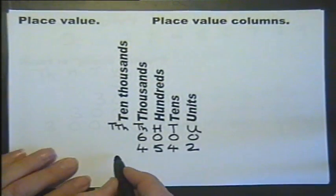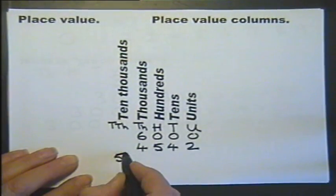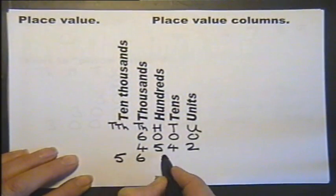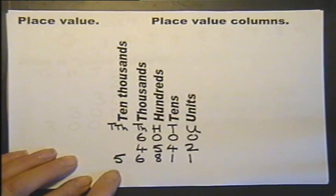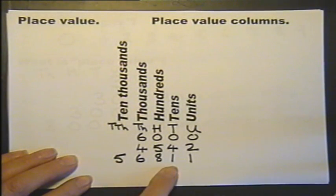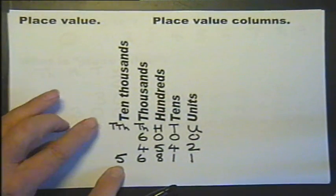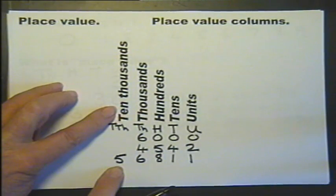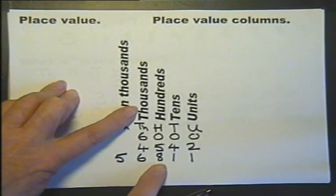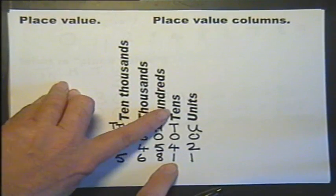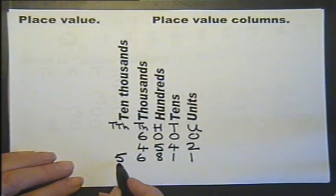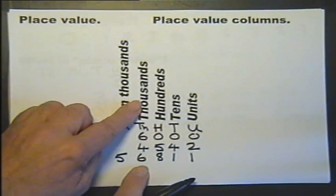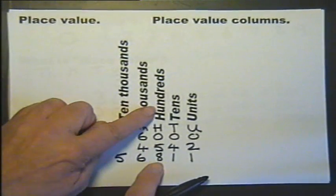Let's look at another number. By putting the digit five in that column, six in that column, eight in that column, and we'll have a one in that column, and a one in that column. So let's see what number these digits read. Let's read this number. So we've got five ten thousands, six thousand, eight hundreds, a ten, and a unit. Now how are we going to read that? Well we actually read this as 56,811.